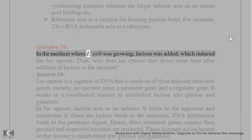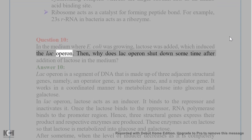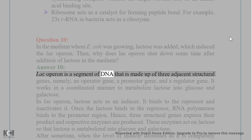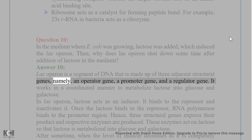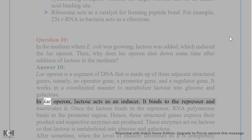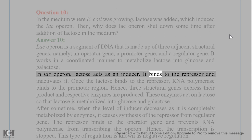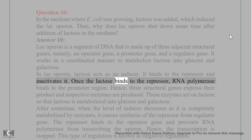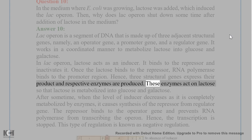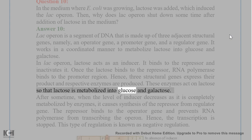Question 10. In the medium where E. coli was growing, lactose was added, which induced the lac operon. Then, why does the lac operon shut down some time after addition of lactose? Answer 10. Lac operon is a segment of DNA made up of three adjacent structural genes, an operator gene, a promoter gene, and a regulator gene. It works in a coordinated manner to metabolize lactose into glucose and galactose. In lac operon, lactose acts as an inducer — it binds to the repressor and inactivates it. Once lactose binds, RNA polymerase binds to the promoter region, the structural genes express their products, and respective enzymes are produced. These enzymes act on lactose so that it is metabolized into glucose and galactose.